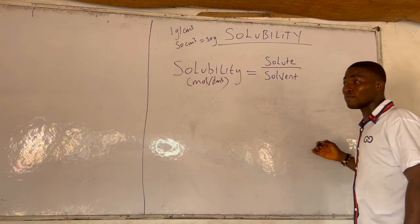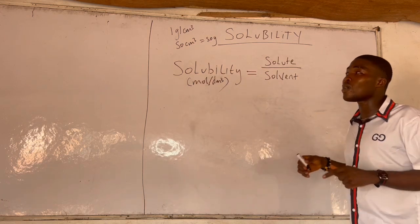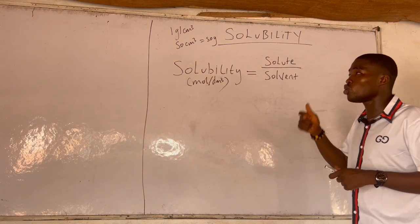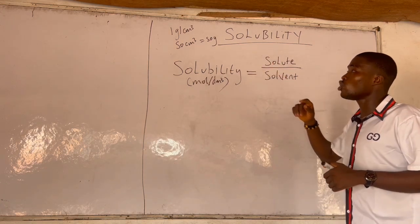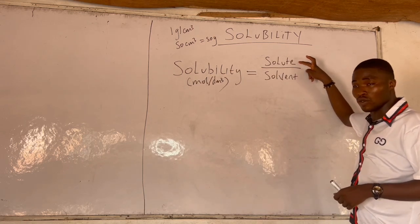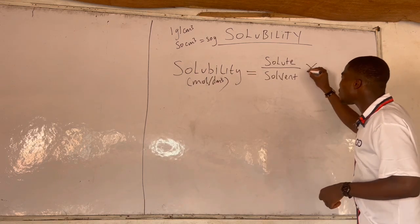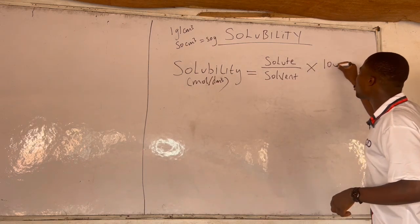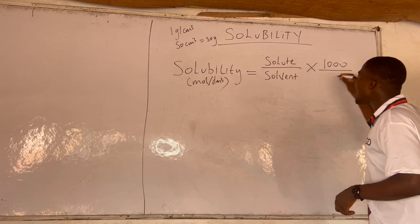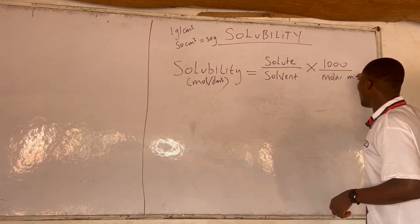The mass of the solutes over the mass of the solvent is the case when volume is not given, and it's usually in water. There are some advanced questions where the density of the solution will not be one gram, so you have to calculate the grams of the solvent. So we can work with mass of solutes over mass of solvent times one thousand over molar mass. Molar mass is in gram per mole.